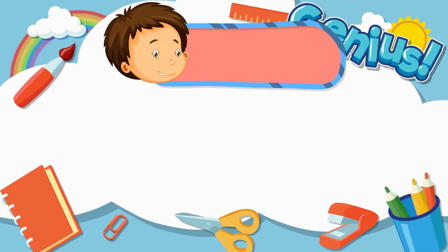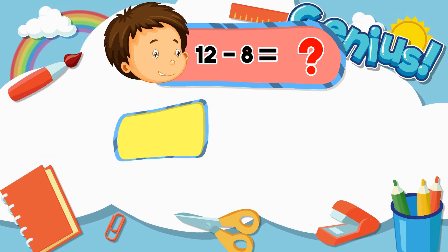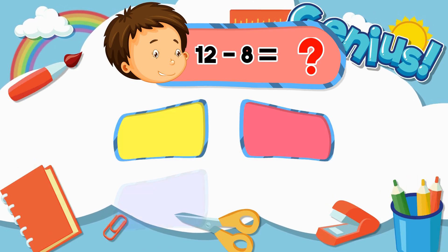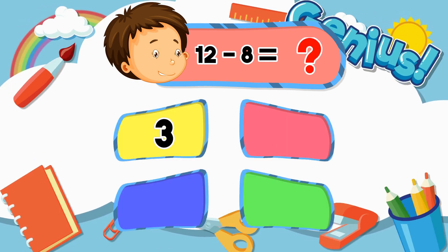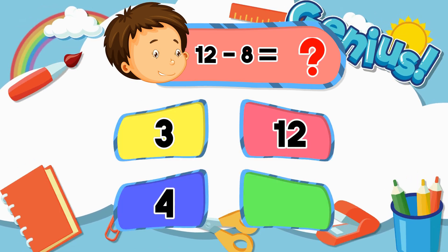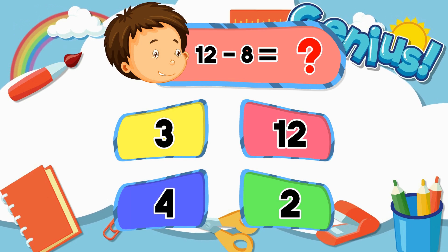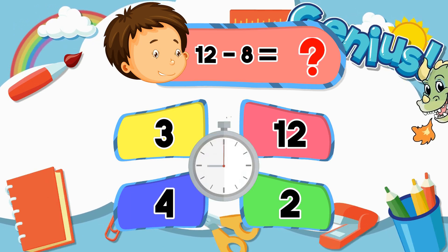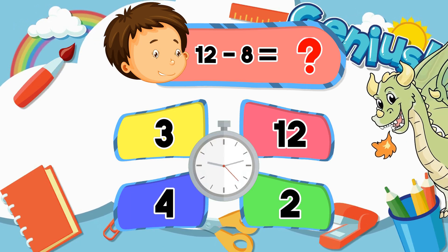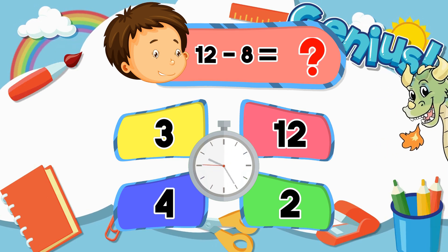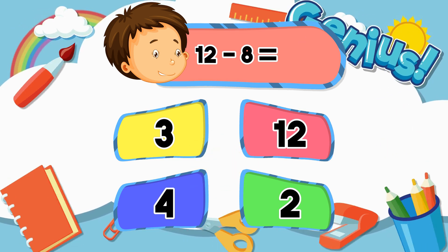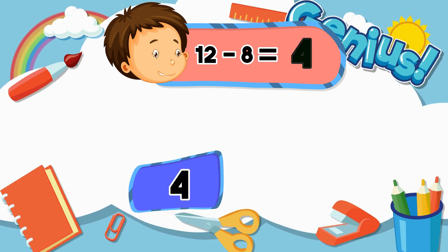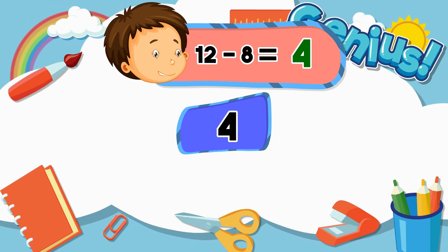What is twelve minus eight? Three. Twelve. Four. Two. Four.